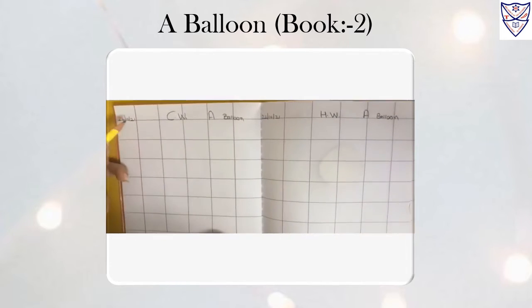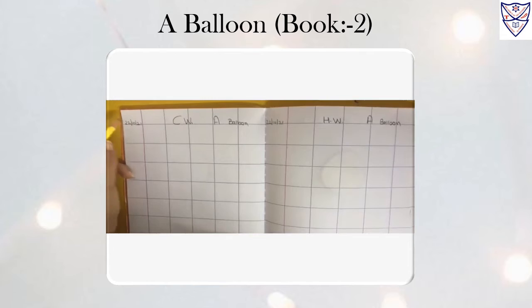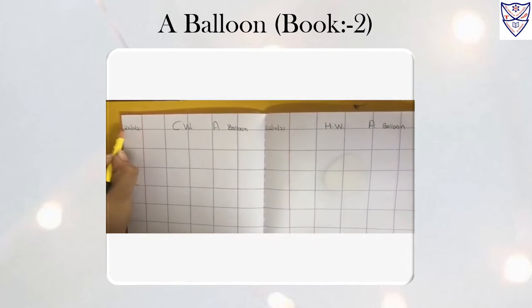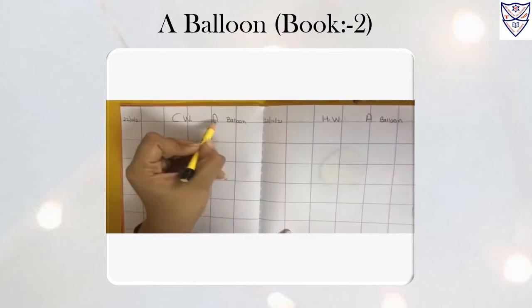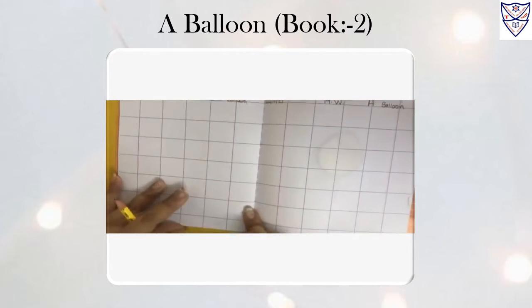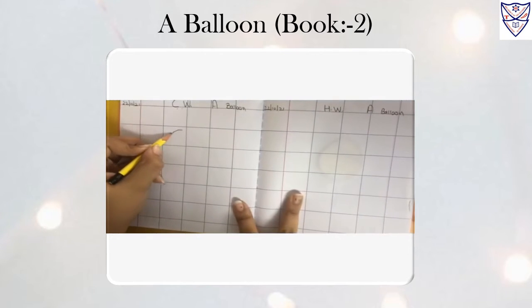My students, take out your book number 2. Write today's date: 2-22-10-21 C.W. classwork. Give heading 'a balloon.' Now today we will draw a balloon in book number 2.